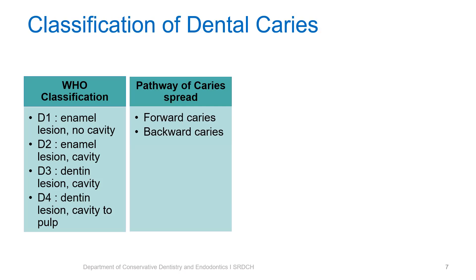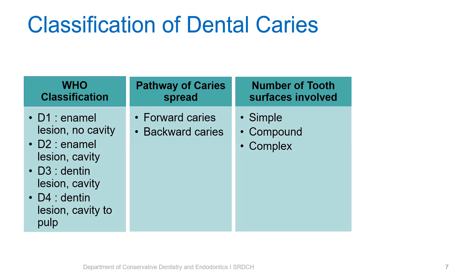Depending upon pathway of caries spread, caries can be classified into forward caries and backward caries. Backward caries typically spreads along the dentino-enamel junction and undermines the overlying tooth structure. Based upon the number of tooth surfaces involved, caries can be classified into simple, which involves one surface only, compound which involves two surfaces, and complex which involves three or more surfaces.